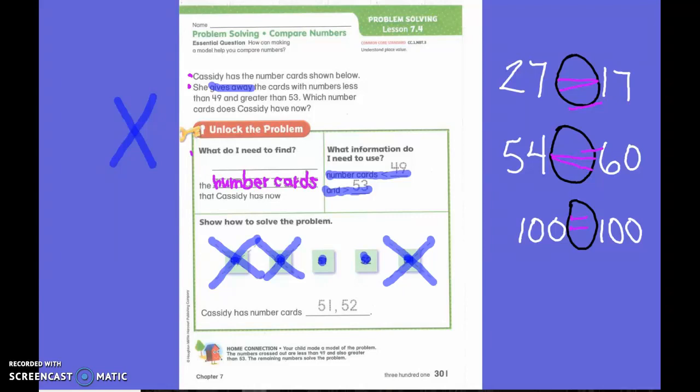So what numbers do I have left? 51 and 52. So Cassidy has the number cards 51 and 52.